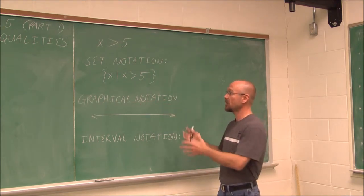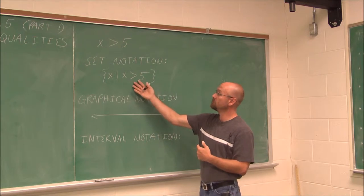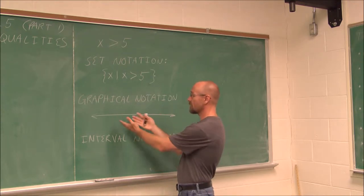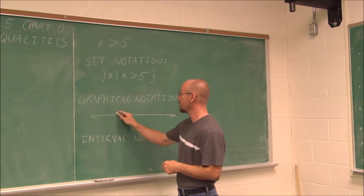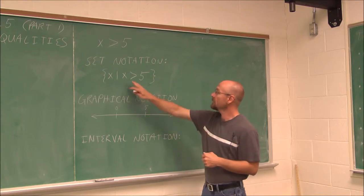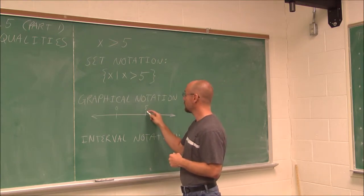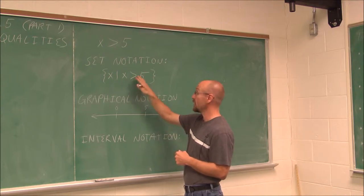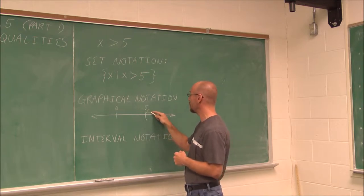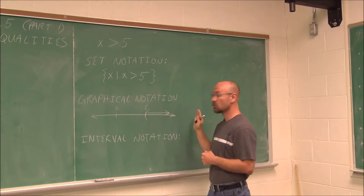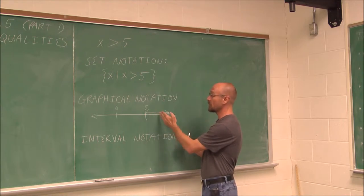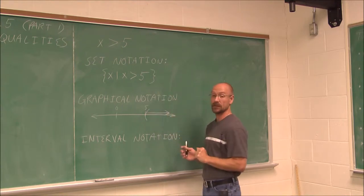Graphical notation is basically taking the algebraic expression x is greater than 5 and putting it on a number line. If this is 0, then we'll call this value 5. It says x is greater than 5. Because it does not include the value 5 — it's just greater than — I'm going to use a parentheses. Any value to the right of 5 is greater than 5, so this graphical illustration shows that the values we're looking at will be greater than 5.